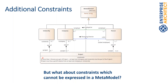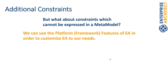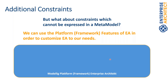How do we cope with these complex constraints? We can use the platform framework features of Enterprise Architect to add additional validations. A simple way is to use SQL searches in combination with model views — within the model view I would see all elements with issues. We can use the Enterprise Architect API, and with the API we can use scripts, add-ins, or model add-ins. In the next slides I will focus on add-ins and how to use the model validation framework of Enterprise Architect to add these additional validations.